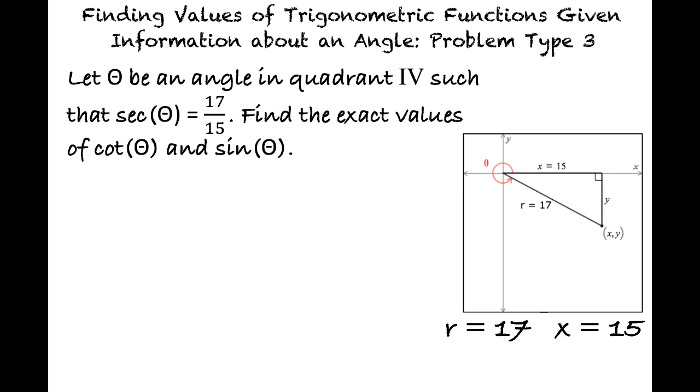Since we are given that the angle is in quadrant 4, we know the values of r and x, and need to use the Pythagorean theorem to solve for y, the opposite side, right? That's right. Substituting the values for r and x into the Pythagorean theorem and solving for y results in 15 squared plus y squared equals 17 squared, which simplifies to y equals plus or minus the square root of 64, yielding plus or minus 8.